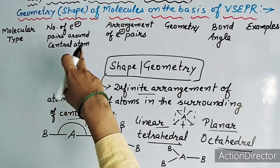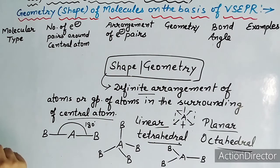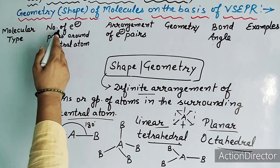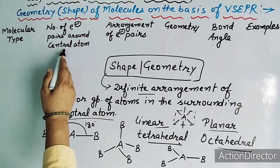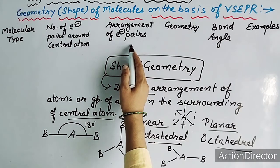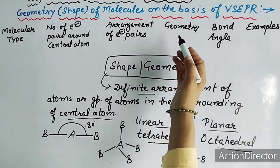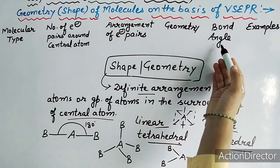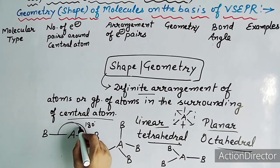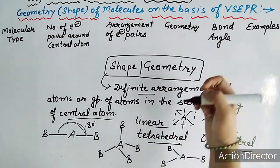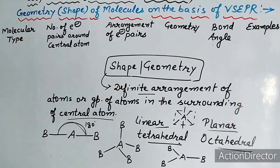आज हम detail में इसी topic को discuss करेंगे। इसके लिए हमने tabular form लिया है — first column: molecular type; second: number of electron pairs in the surrounding of central atom; third: arrangement of electron pairs; फिर shape या geometry; bond angle — जैसे linear shape में 180 degree; और finally suitable examples के साथ explain करेंगे।